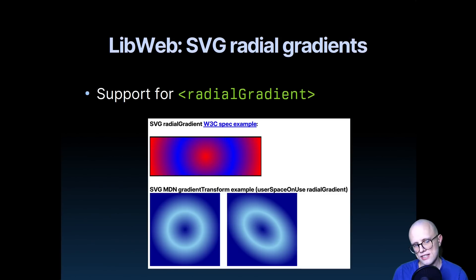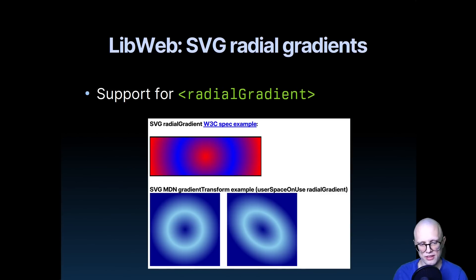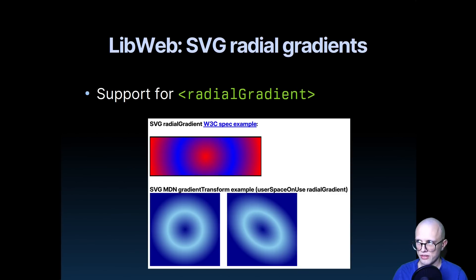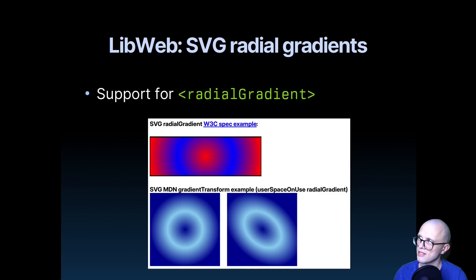SVG radial gradients is something Mac do implemented — he did linear gradient last month, and this month he came out again with another banger: radial gradient. You can see some examples of us rendering radial gradients, and we support all the different modes and settings you can render in. So thank you, Mac do, for implementing all the gradients. I think he was on a mission to implement all possible gradients in the web engine, and I'm not sure if he completed that or if there are any remaining — if so, I'm sure he'll go hunt them down.